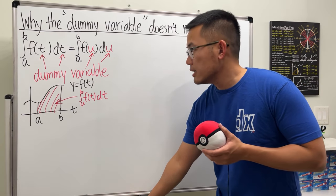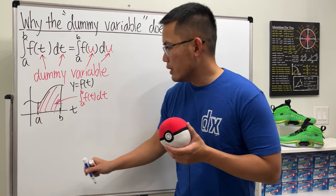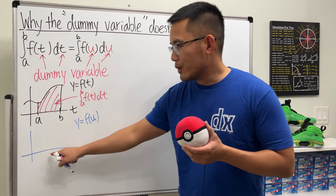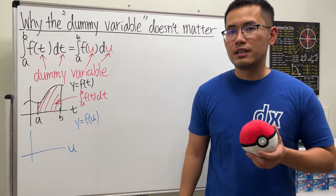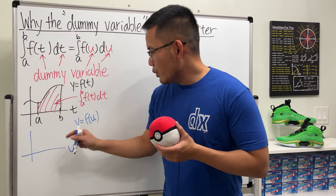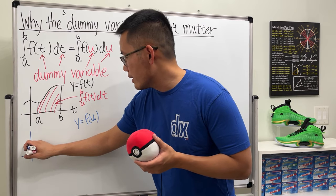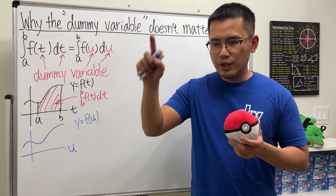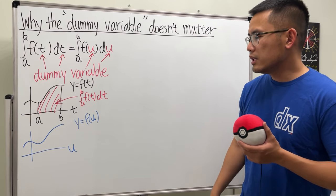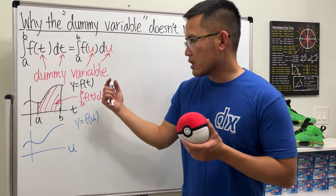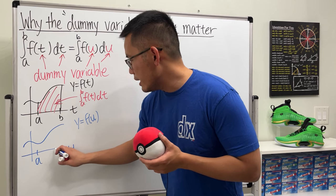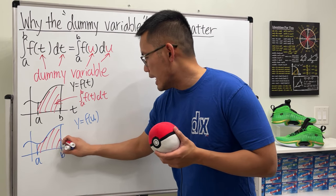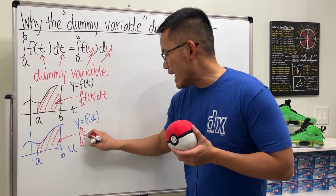Next, let's graph f of u. When we graph y equals f of u, the only difference is that the horizontal axis is labeled u. We still get the same curve — just as graphing t-squared versus u-squared gives the same picture. It doesn't matter what variable you use; it's just a different label on the axis. Going from a to b, the area is the same: the integral from a to b of f of u du.